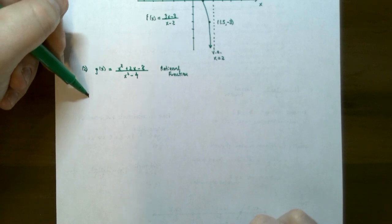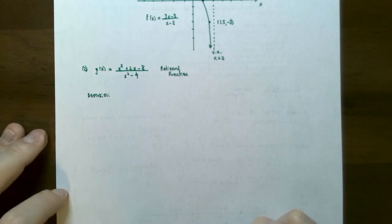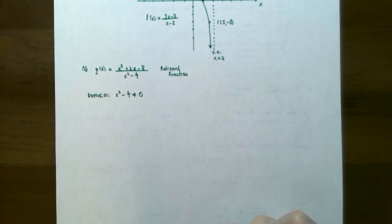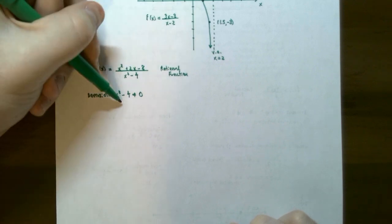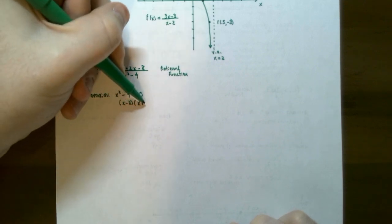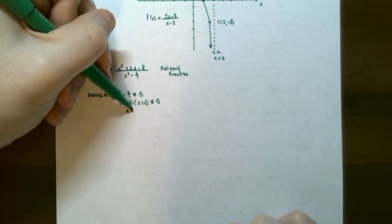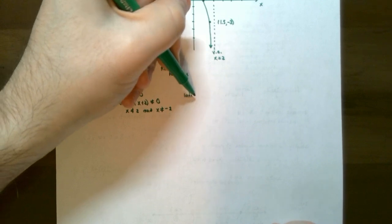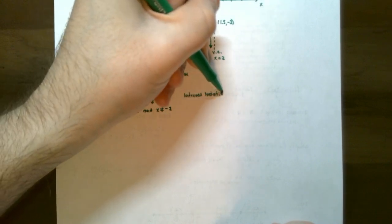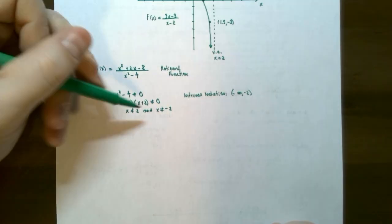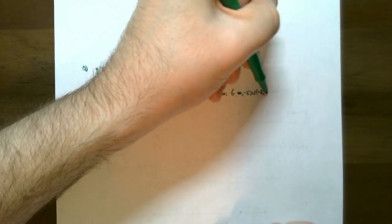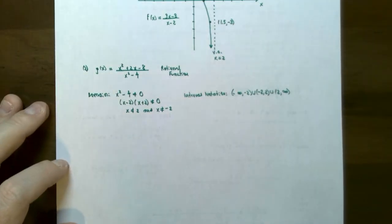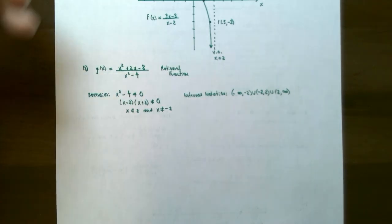First step: find the domain. The denominator x squared subtract 4 cannot equal zero. Factoring gives the difference of squares, so x cannot be 2 and x cannot be negative 2. The domain using interval notation is negative infinity to negative 2, union negative 2 to 2, union 2 to infinity.